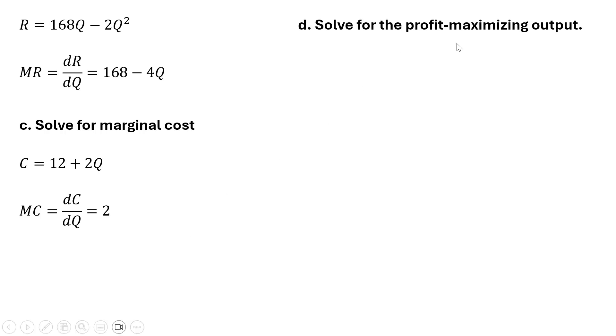Next, let's solve for the profit maximizing output. We can do that by setting marginal revenue equal to marginal cost. So setting marginal revenue equal to marginal cost and now solving for q. Moving the 2 over to the other side and the 4q over to the other side and simplifying, we get the profit maximizing output of 41.5 units.